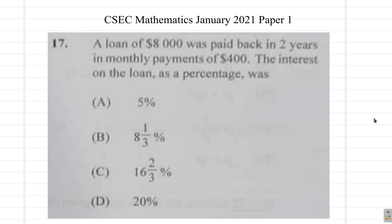Let us find out how much the person actually paid in terms of $400 per month and two years. So it would be $400 every month. Two years is 24 months, so there are 24 payments.